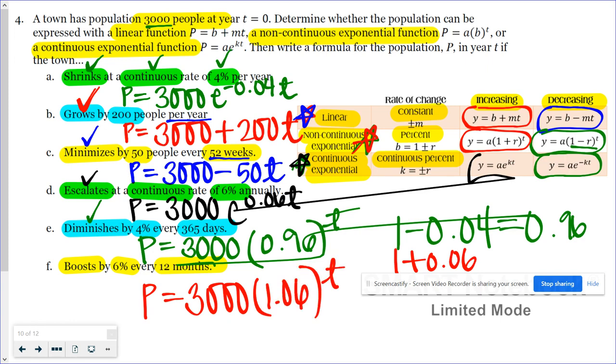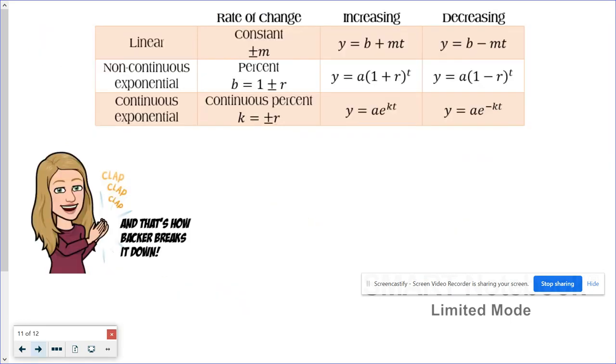And that's how we write linear and exponential functions, whether they're base b or base e. It all comes down to that rate of change. If it's constant, that means it's a linear function. If it's a percentage, it could be our non-continuous or continuous exponential functions. The bottom line is if they use that word continuous followed by a percent rate, then it's a continuous exponential, and that's when you're going to have the base e. And that's how Backer breaks it down. Bye.